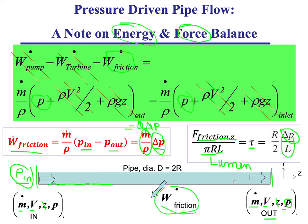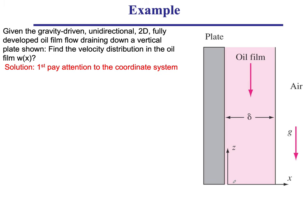We will revisit this in more depth when we talk about turbulent and laminar pipe flows in chapter six. Now let's solve a problem: a gravity-driven unidirectional flow. Given a gravity-driven unidirectional two-dimensional fully developed oil film draining down a vertical plate, what is the velocity distribution Vz = w as a function of x in the oil film?